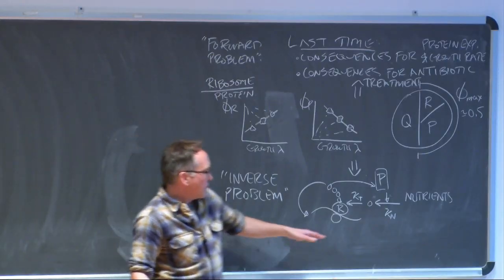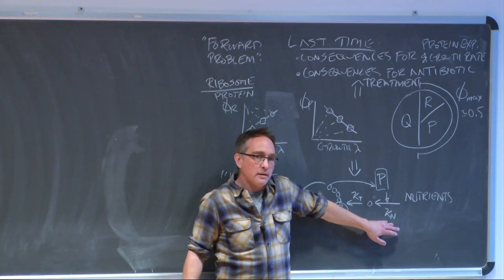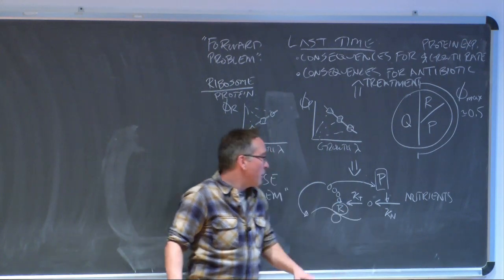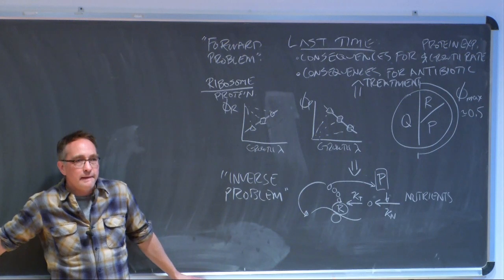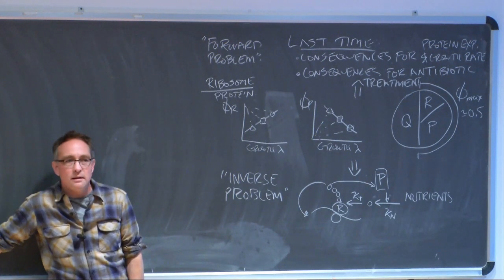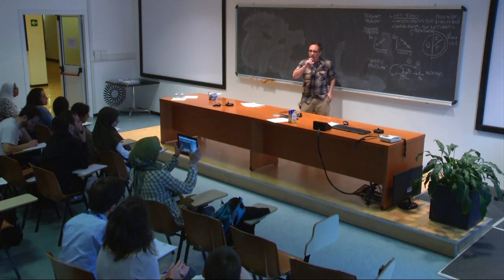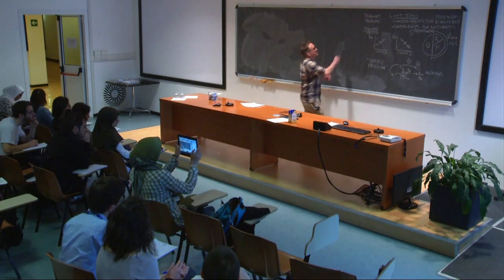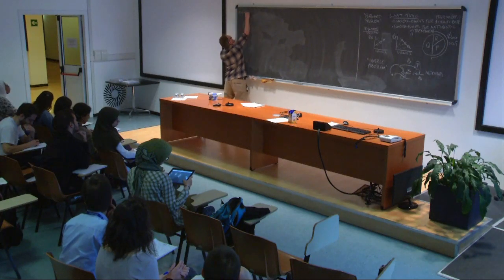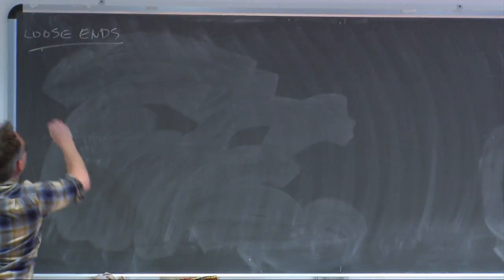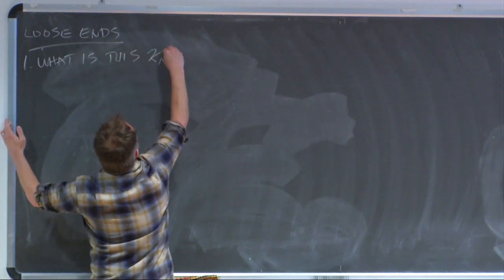A couple of people asked if we could clarify the meaning of the kappa_N parameter, and clarify the electrical circuit analogy we used at the end of last lecture. So let me talk about loose ends. Loose end number one: what is this kappa_N parameter? At the beginning of last week, this kappa_T parameter had something to do with protein synthesis, and I suggested that kappa_N had something to do with nutrient quality — but that's a very qualitative assessment.